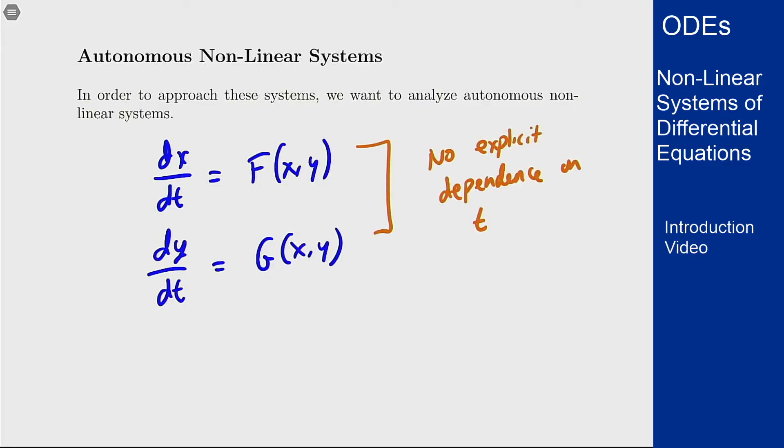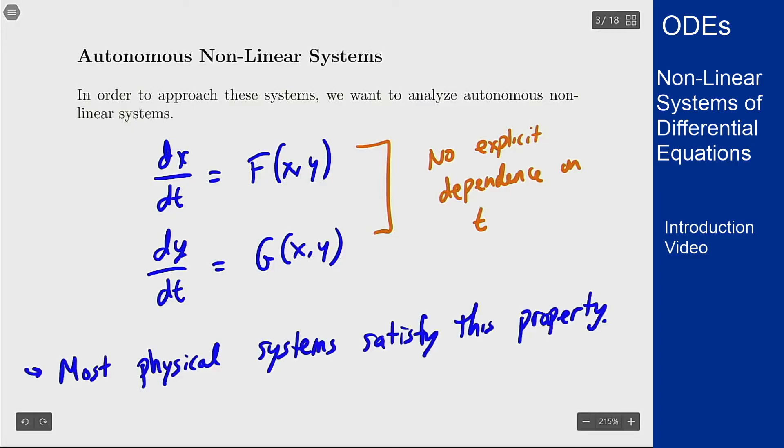In general, we're okay with the assumption because most physical systems satisfy this property. The main idea here being that the way in which these populations or things interact doesn't specifically depend on the exact time of day or the exact time this is going to be running. The model that governs how they interact is the same. It's going to develop over time because the values themselves are going to change over time. There's no explicit dependence on t in how they actually interact with each other.